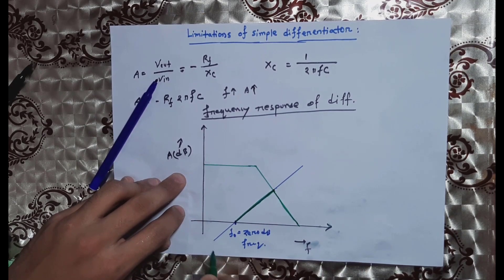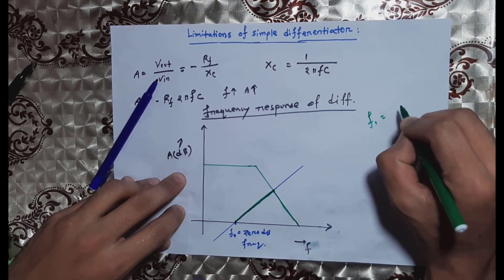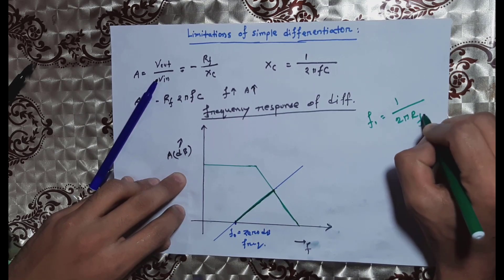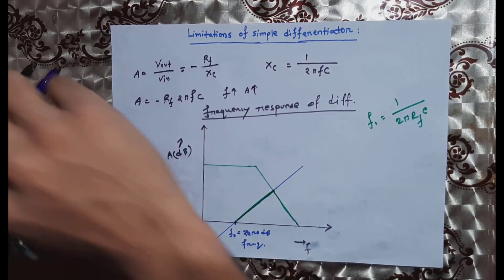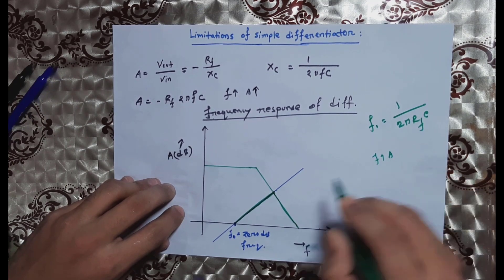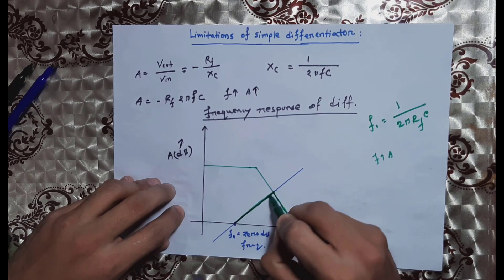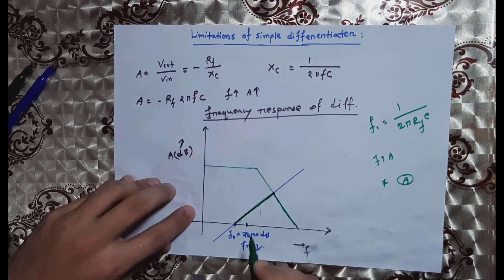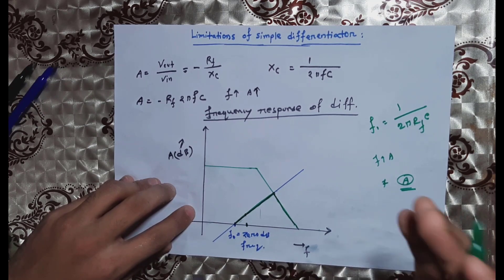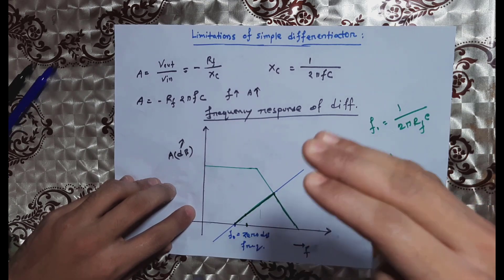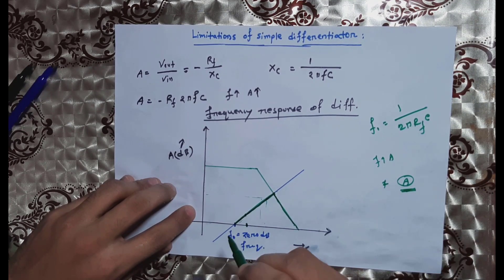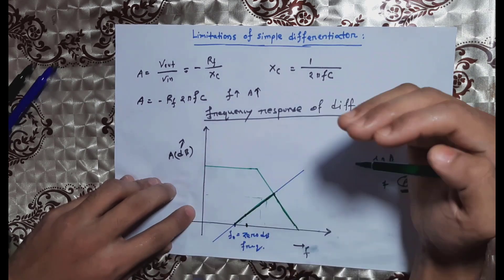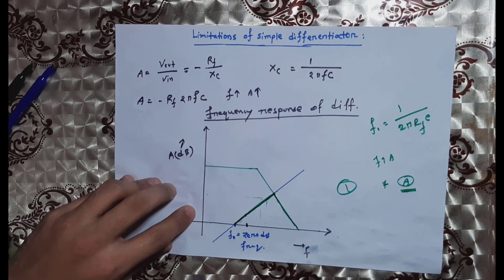F0 is the 0 dB frequency, equal to 1 divided by 2πRf times C, where Rf is the feedback resistance. The practical differentiator graph follows this response. At low frequency we get gain, but at high frequency the gain increases, amplifying noise. The biggest problem is that the op-amp is very sensitive to high-frequency noise.